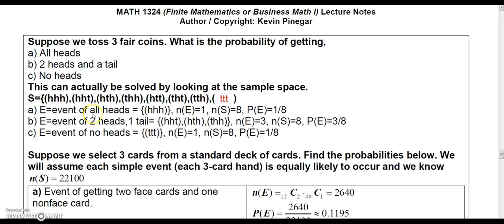And so the event of all heads would be just the one possibility. So the probability of that, we would say one out of eight, because we're going to assume each one of these is equally likely to occur.